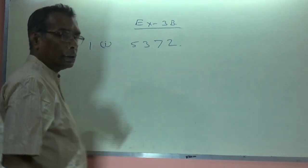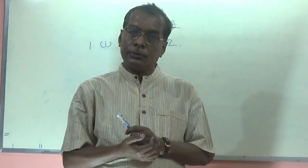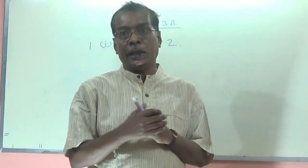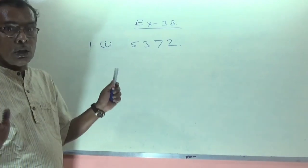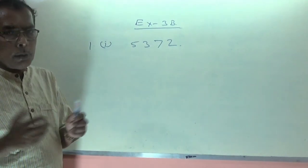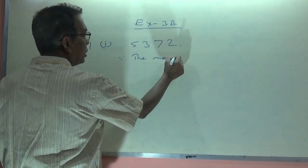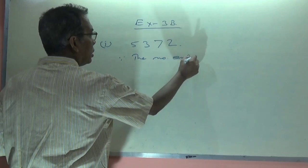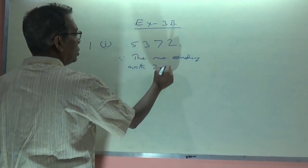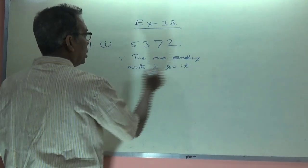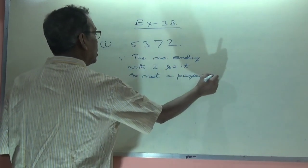They are saying it is not a perfect square, but we will have to give the reason behind it. What reason are we going to write here? Since the number is ending with 2, it is not a perfect square. Very simple — since the number ends with 2, it is not a perfect square.